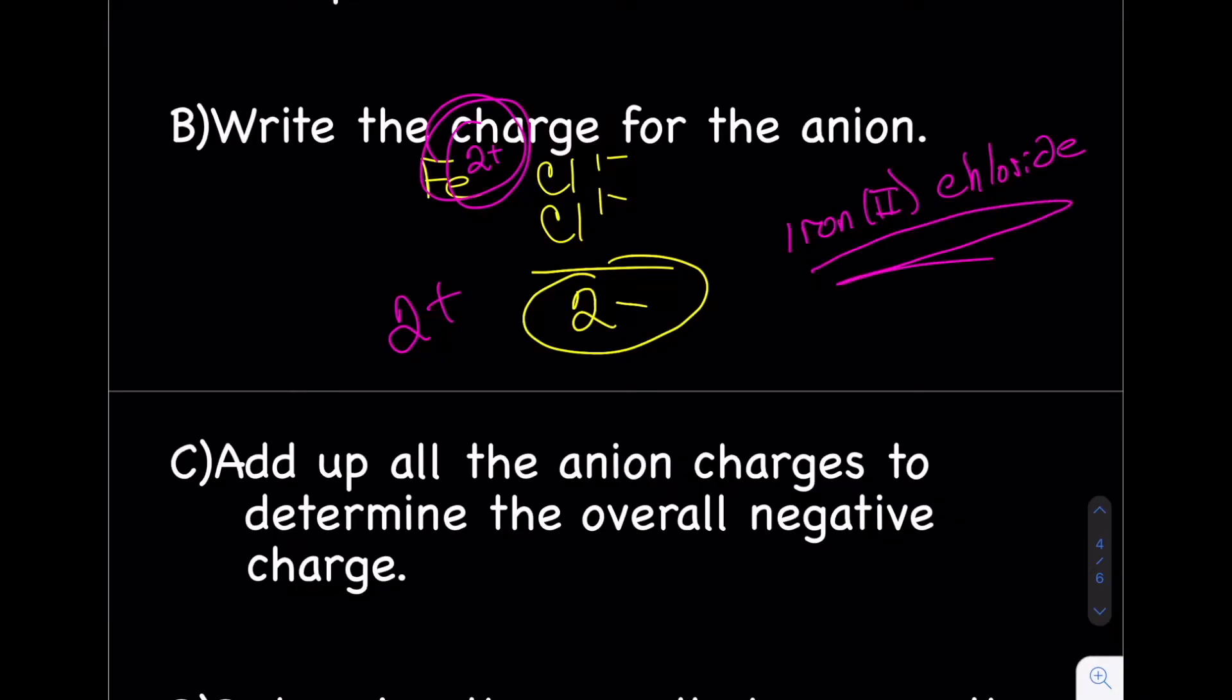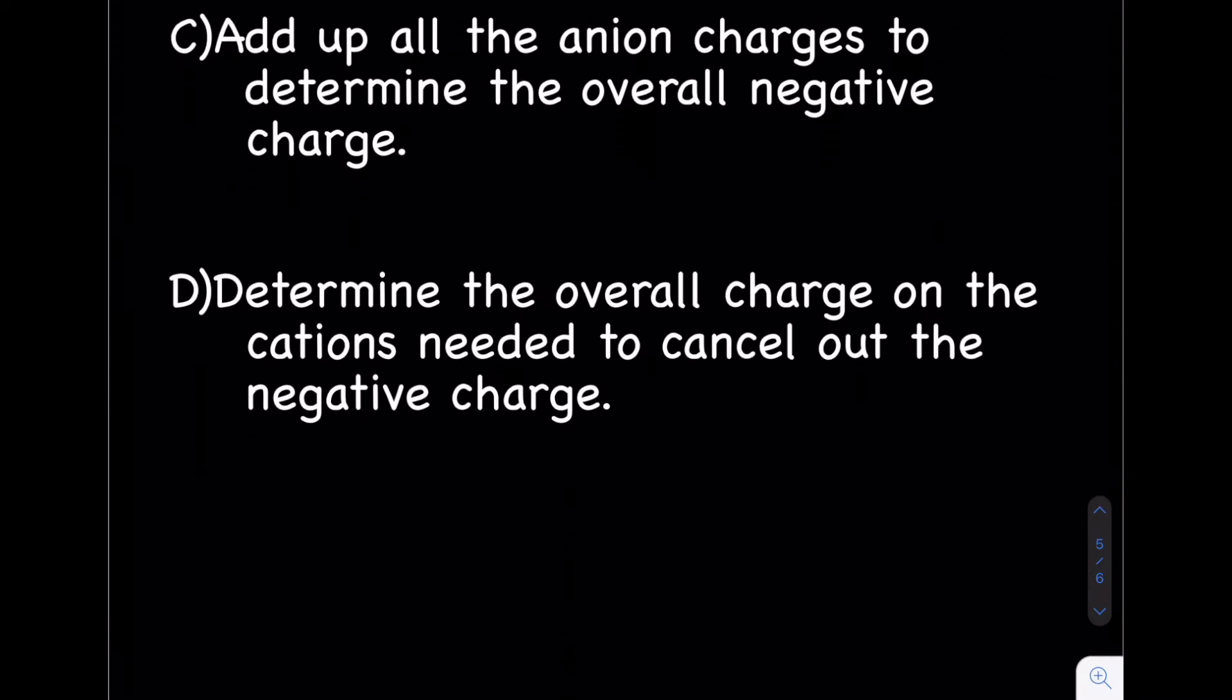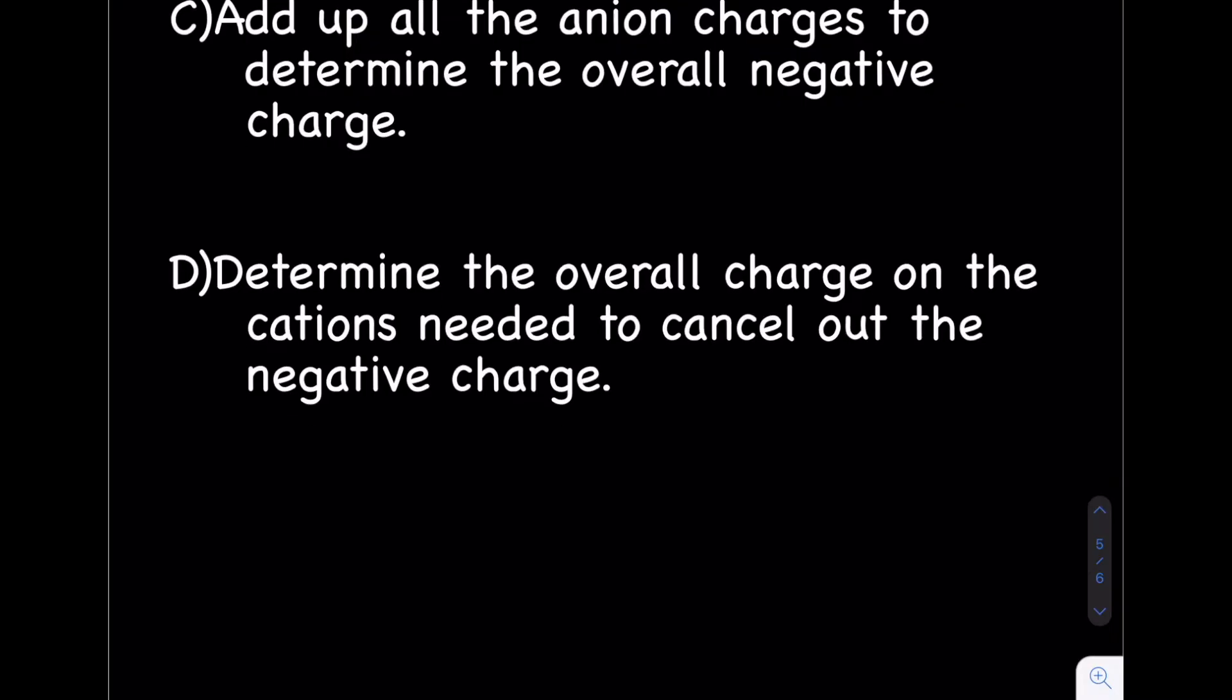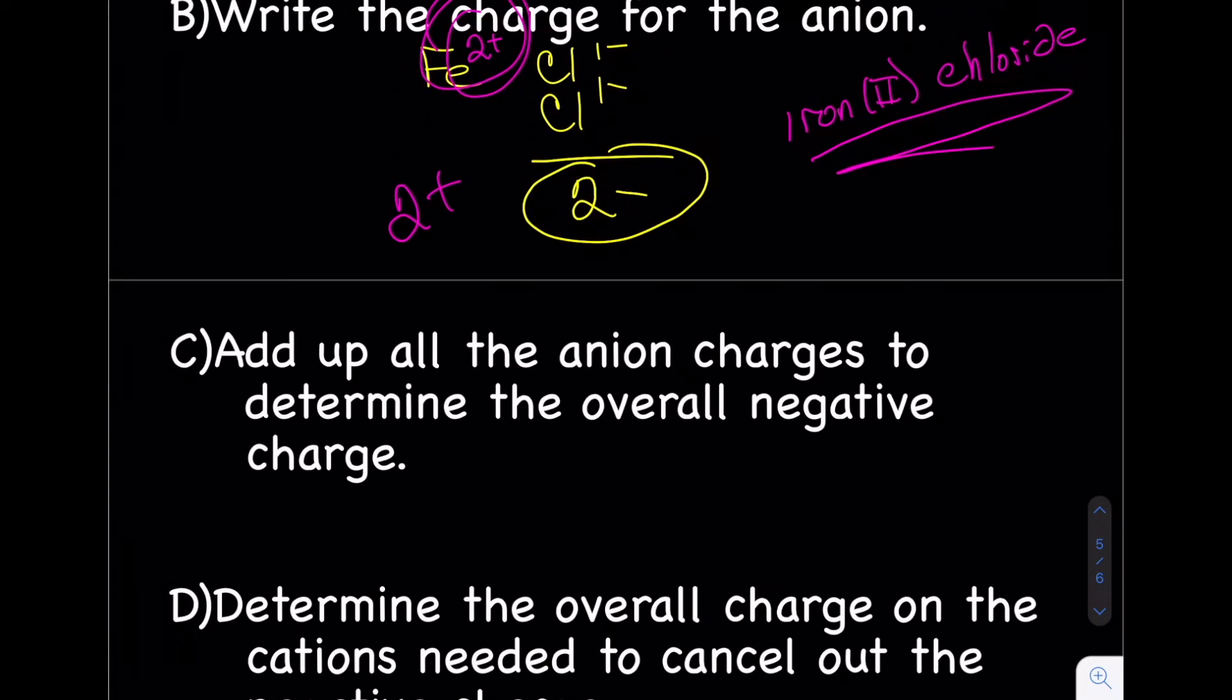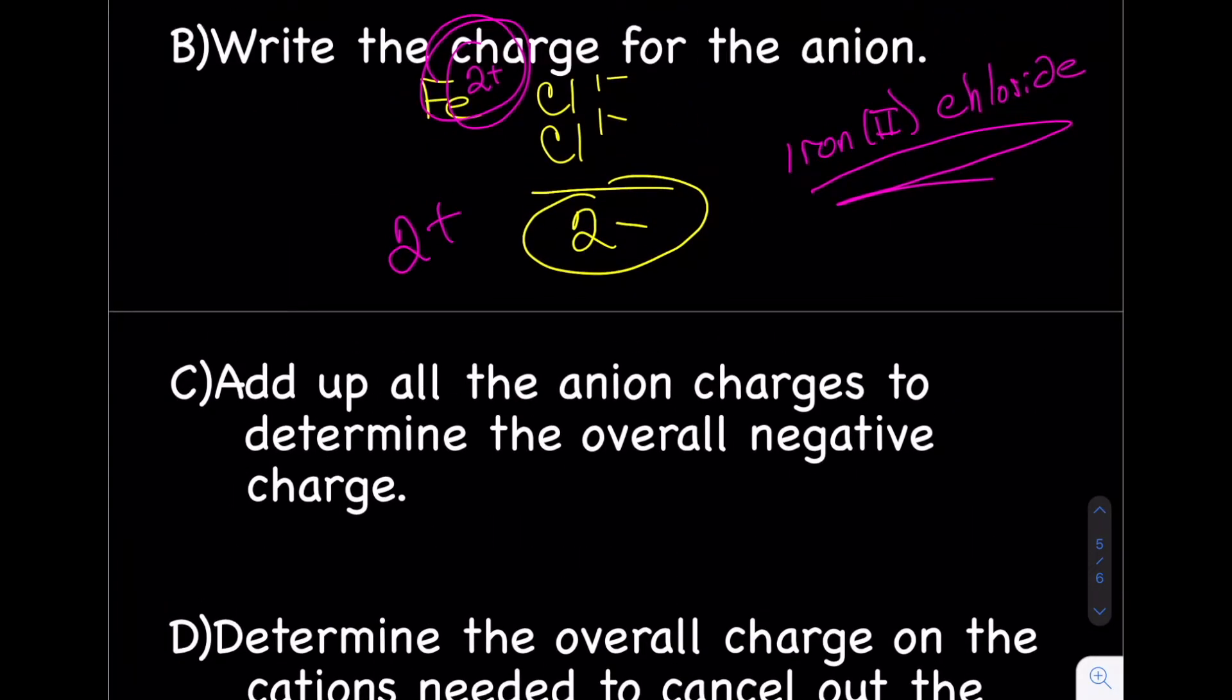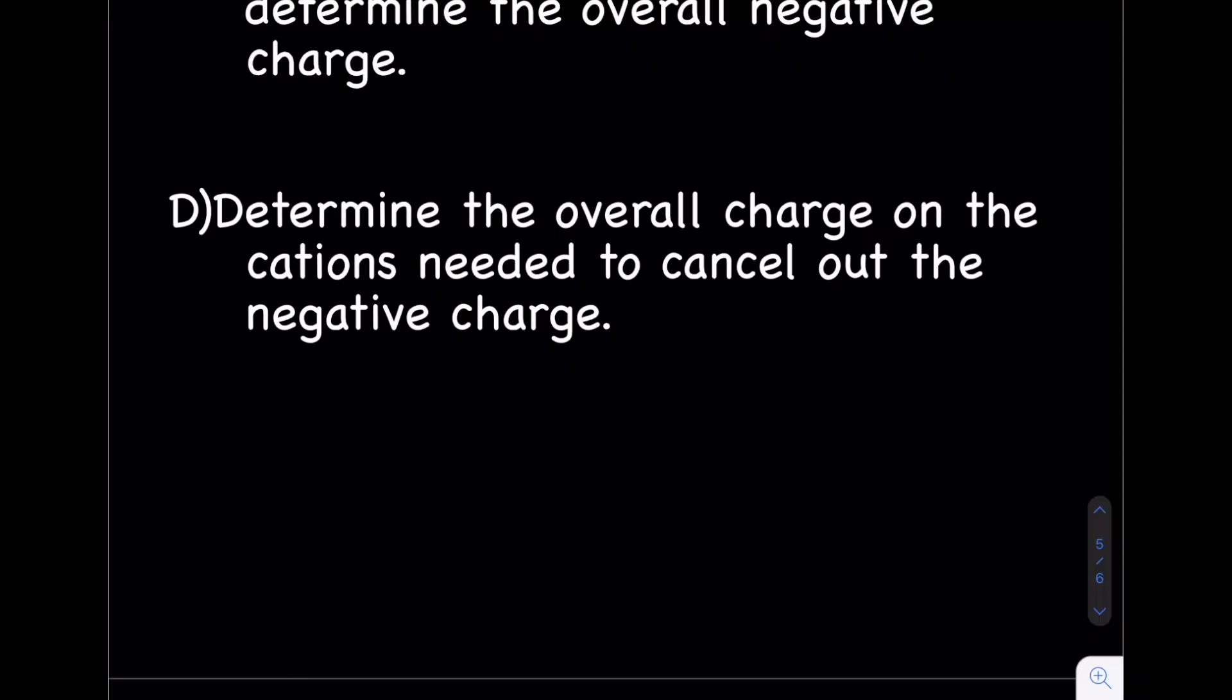And this is going to be our Roman numeral. So the name is going to be Iron(II) Chloride. Now there is one more step in our notes that we didn't really have to do this time, which is step D. The last step is divide the overall charge by the number of cations to determine the charge of the cation. We didn't need to do that because there was only one of them. We'll try another example where we do have to follow that step.